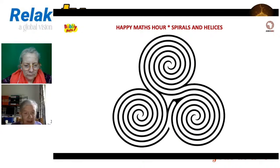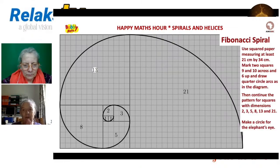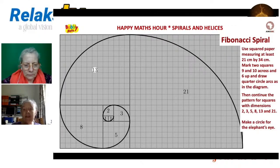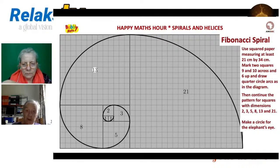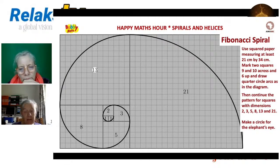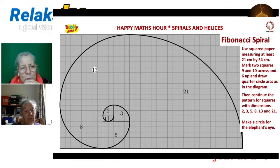Now we have the Fibonacci spiral. The sequence starts with one, one, then you add them to get two, then one and two to get three, then two and three to get five. After 34, what's the next Fibonacci number? You can draw this yourself - how big a spiral can you make?